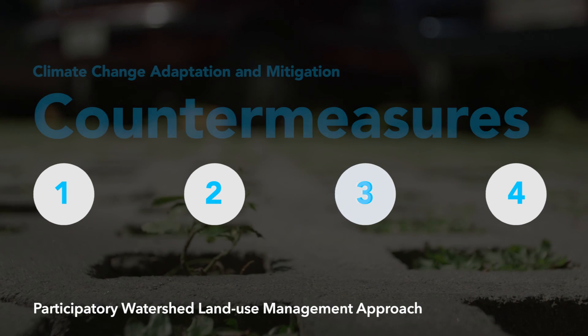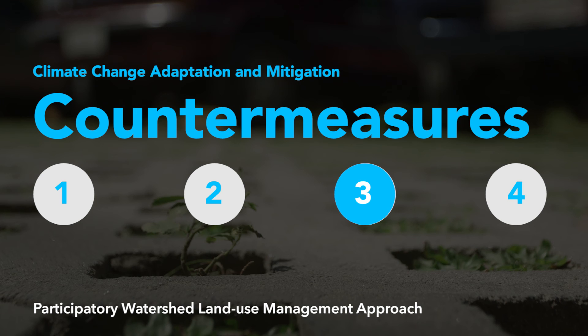Step three of this approach consists of identifying climate change countermeasures, considering the results of the risk assessment and the flood modeling simulation. Local governments now have concrete information to plan for future land use and scientific information to better support climate-sensitive development.